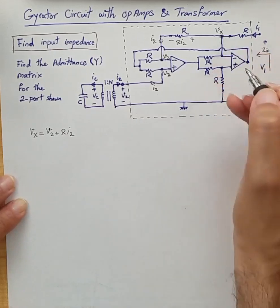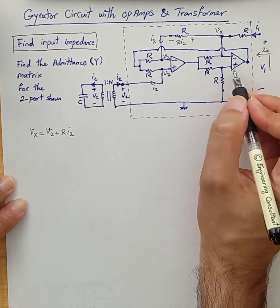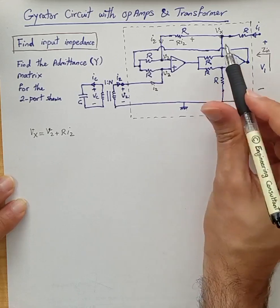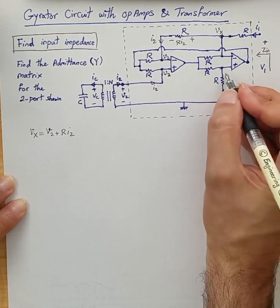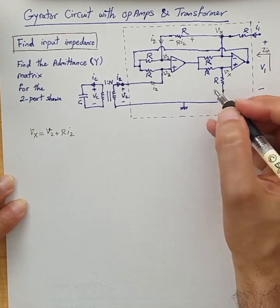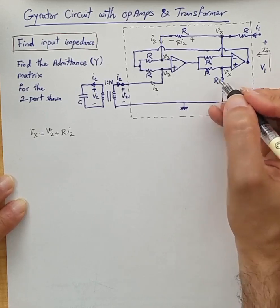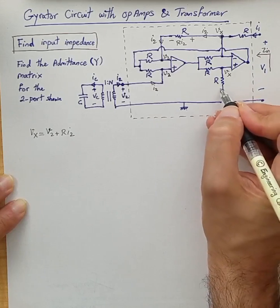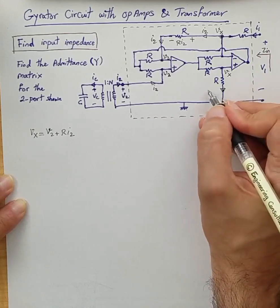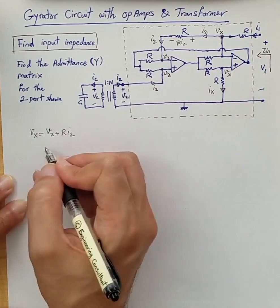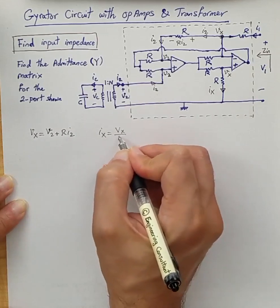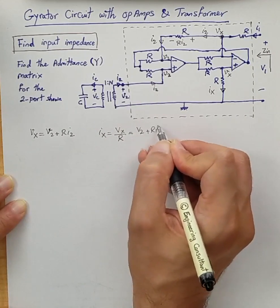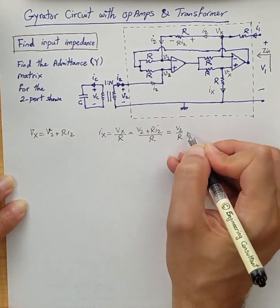Since the second op-amp is also ideal and operating with negative feedback, the voltages at its positive and negative terminals must be equal. So if the positive terminal is at Vx, the negative terminal is also at Vx. Therefore the current flowing through that resistor, which we call Ix, equals Vx over R. Substituting Vx = V2 + R·I2, we get Ix = V2/R + I2.